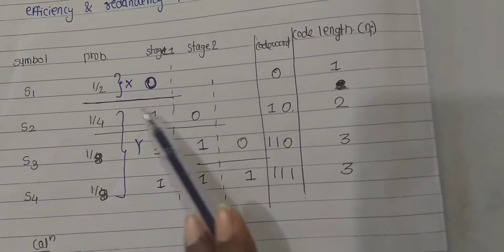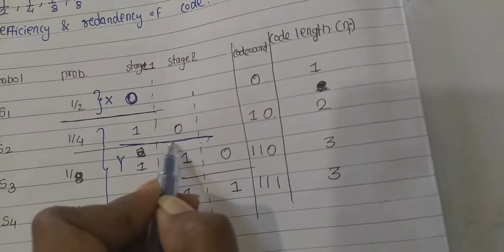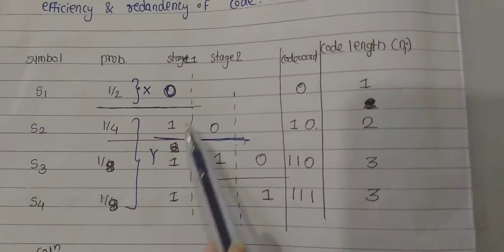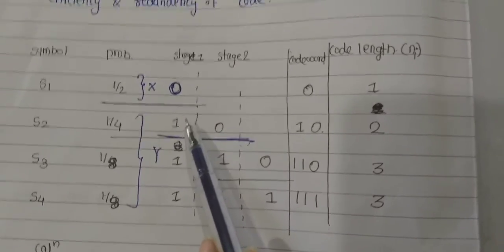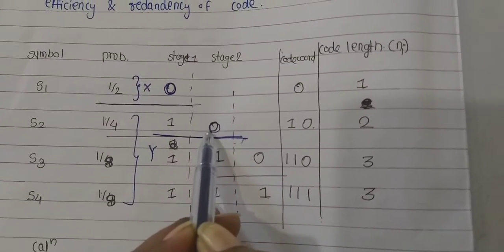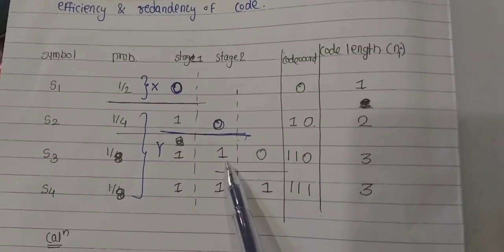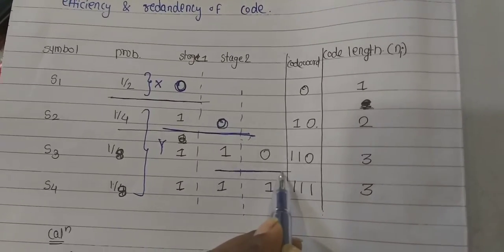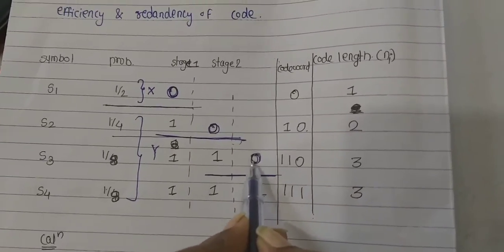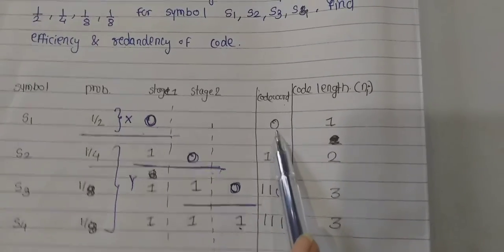For the remaining three symbols s2, s3, and s4, divide again into two parts. The first part is 1/4 and the next part is 1/4, since 0.5 remains and splits into 0.25 and 0.25. Assign symbol 0 to the first half (s2) and 1 to the second half. Stop for s2, then repeat for s3 and s4: divide into two parts again and assign 0 to s3 and 1 to s4.